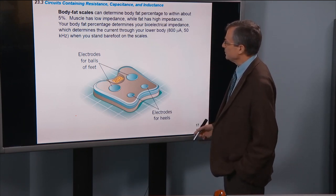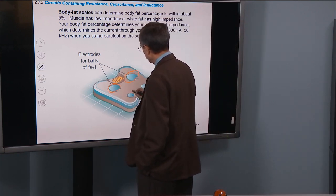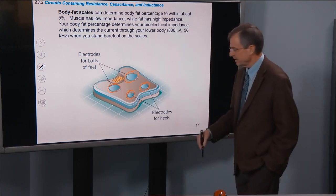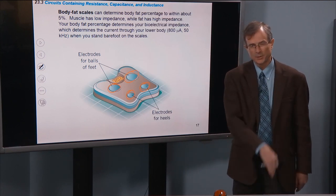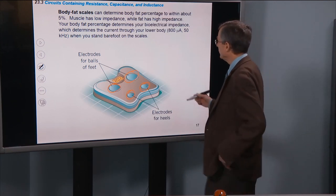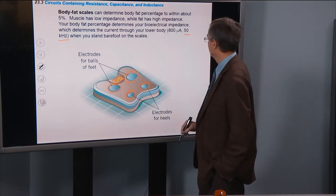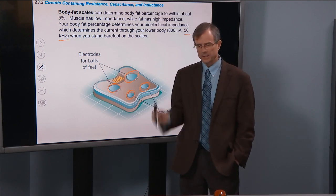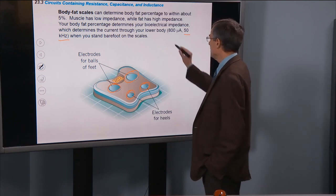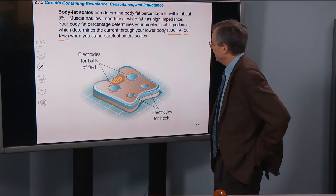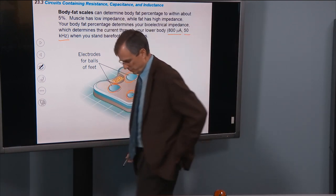When you stand on these body fat scales, there are conducting electrodes on the balls and heels of your feet. That sends a current up through your body from your right leg down to your left leg and back, at a high frequency—50 kHz, 50,000 cycles per second. It's not much current; it's not going to hurt you. But it measures the impedance of the lower part of your body.